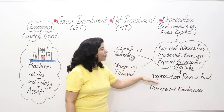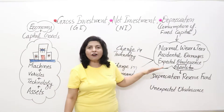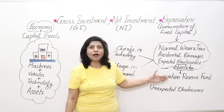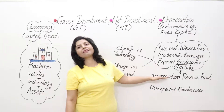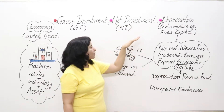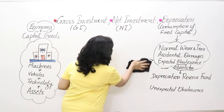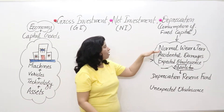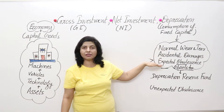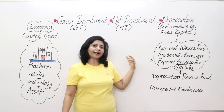Next we have the depreciation reserve fund. What is that? This is simply the fund managed by businessmen for replacement investment or for managing their depreciation. They buy machines to produce, but after long-term use — because of normal wear and tear, accidental damages, and expected obsolescence — these machines become old, outdated, or can't be used.